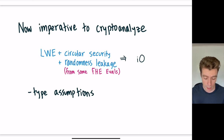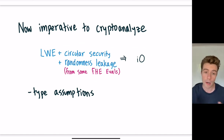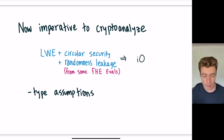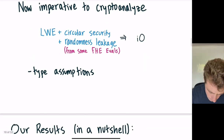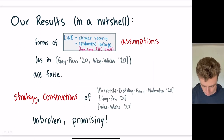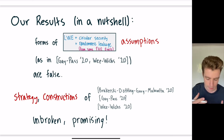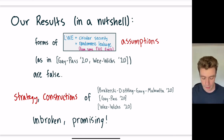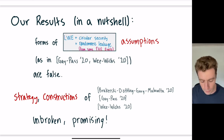This suggests there is an avenue to simple and post-quantum secure IO based just on lattice problems. But it now means it's imperative to analyze this type of assumption — we need to understand if these assumptions are secure, or if not, how they can be modified to be secure. Our paper is cryptanalyzing assumptions of this flavor. We're in the attack part of the construction-attack cycle, and our results are a cryptanalytic attack on the particular instantiations of this flavor of assumption that are in the Gay-Pass and Wee-Wichs works. We show that the assumptions in those works as stated are false.